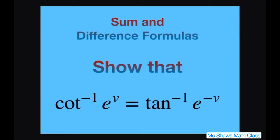Hi everyone. We're going to show that inverse cotangent of e to the v power equals inverse tangent of e to the negative v power.